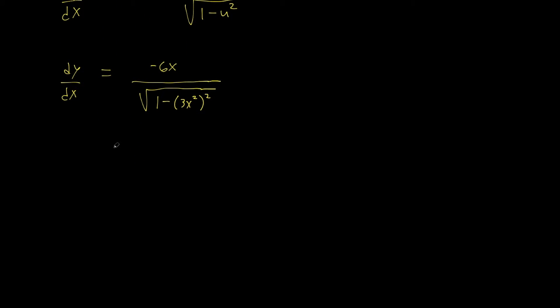So we do have one more line. We can write dy/dx equals negative 6x over square root of 1 minus 9, because 3 squared is 9, times x squared squared. It's going to be x to the 4th, because we multiply exponents. An exponent to an exponent, you multiply the exponents together, and we get 2 times 2 is 4. So we have dy/dx equals negative 6x over square root of 1 minus 9x to the 4th power.